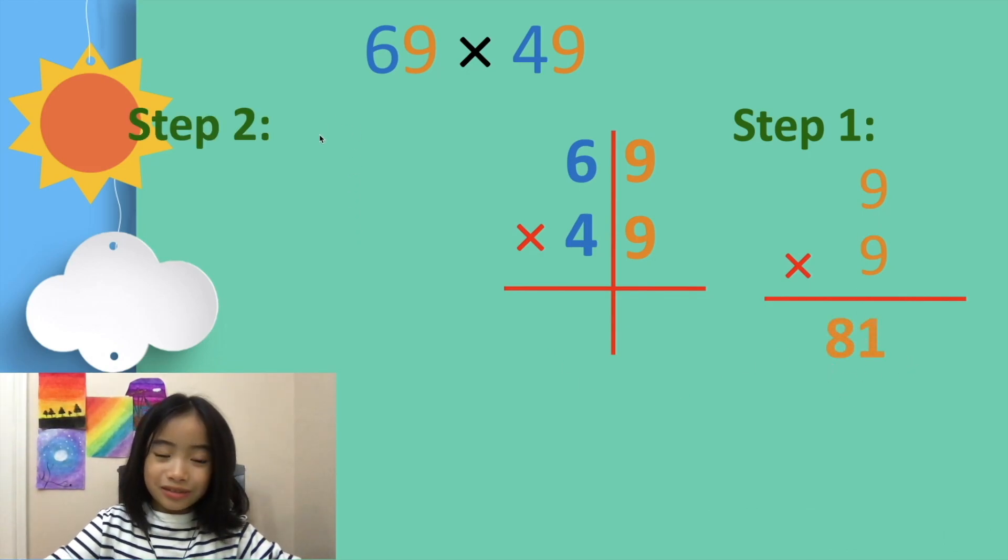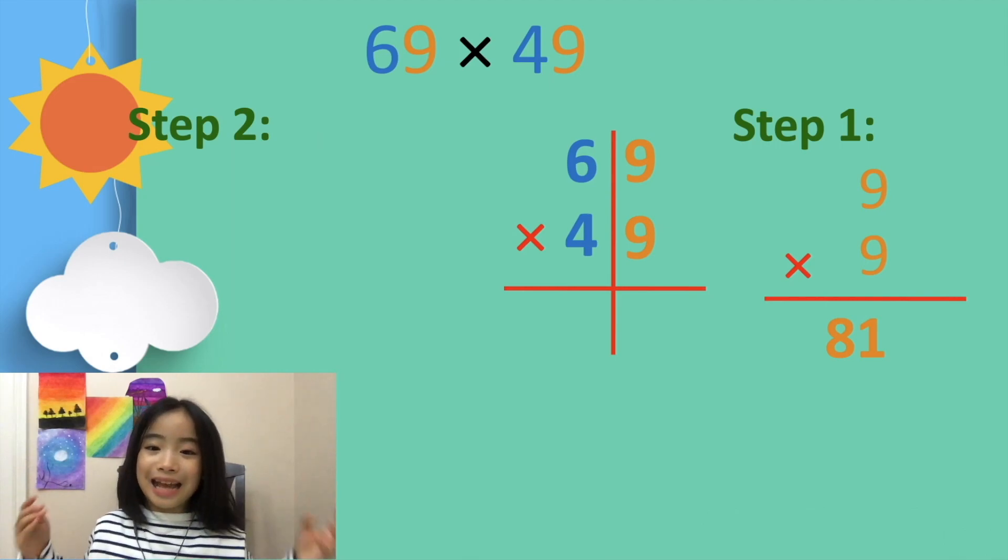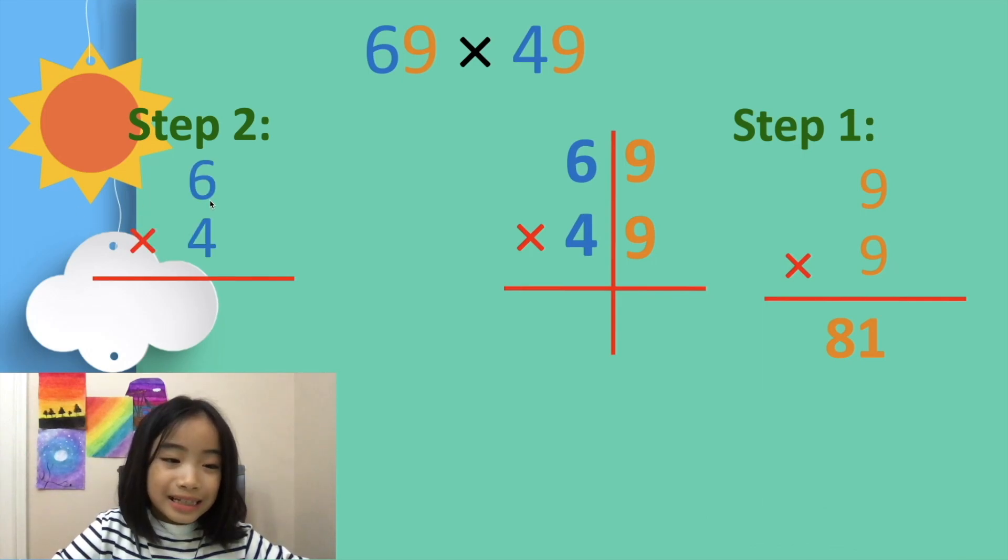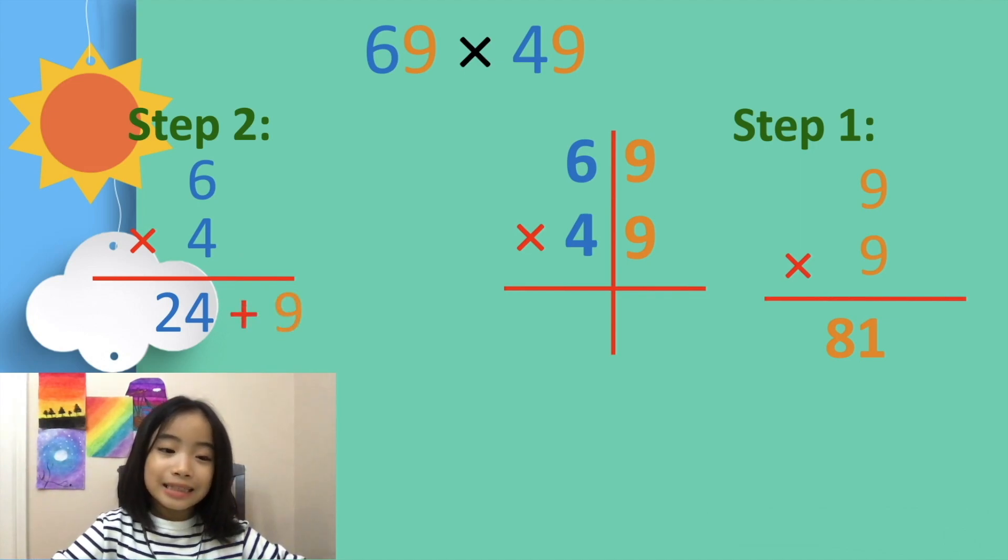Step 2: Multiply the tens digit, then add the ones digit. So, 6 x 4 equals 24. 24 plus 9 equals 33.